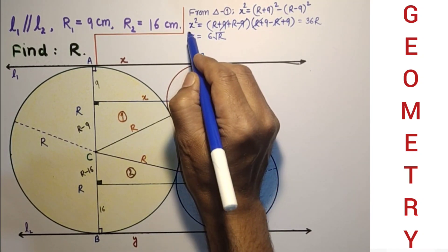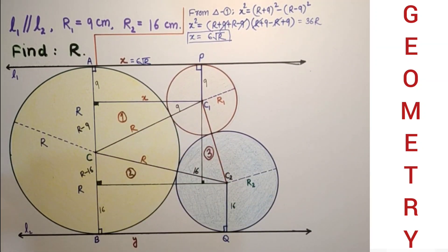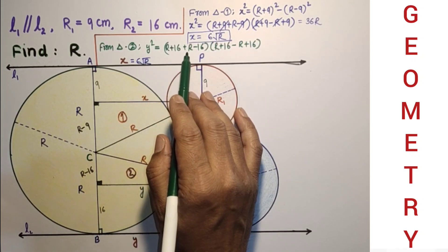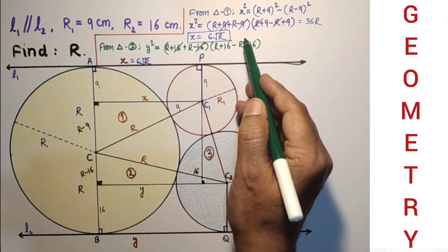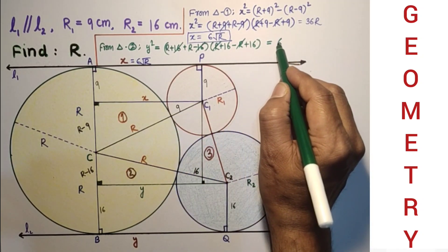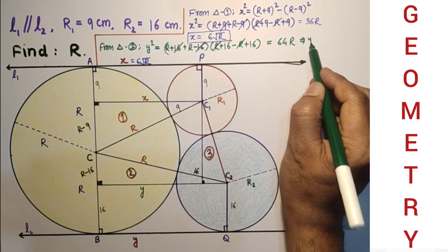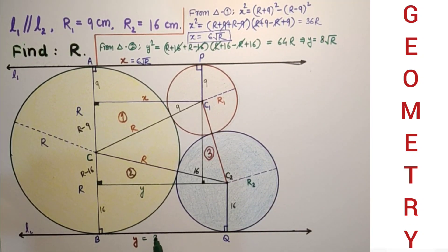First result we found X equals 6√R. In the same way from triangle 2, Y² equals (R+16)² minus (R-16)². In the same way we can write Y² equals (2R+16+R-16) into (R+16-R+16). Plus 16 minus 16 will get cancelled, minus R and R will get cut. So 2R into 32 which is 64R and we get Y equals 8√R.